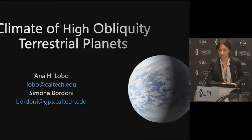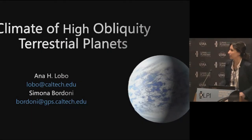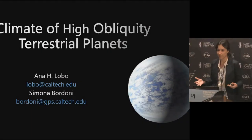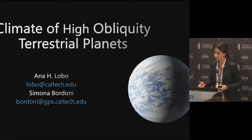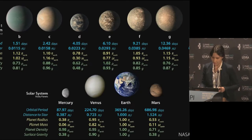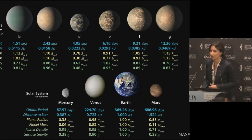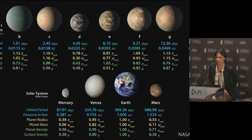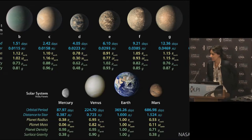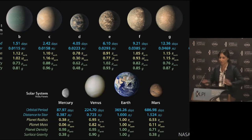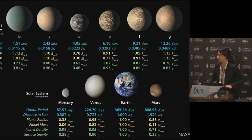We'll get right to it. I'll be talking about Earth-like planets at higher obliquities. I figured I'd start with this image because all the cool kids have a TRAPPIST-1 figure in their presentation. But I will not be talking about tidally locked planets, so we're not talking about TRAPPIST-1.